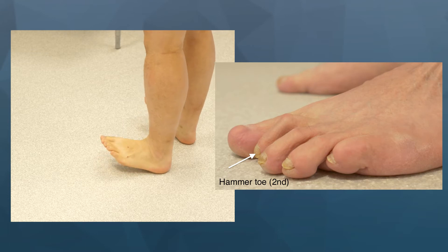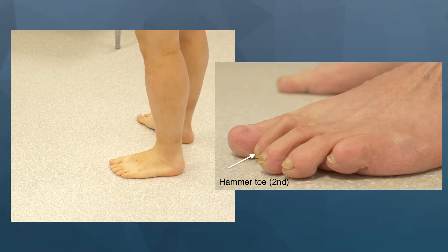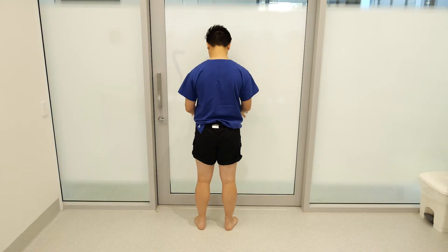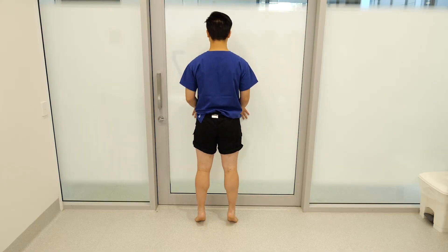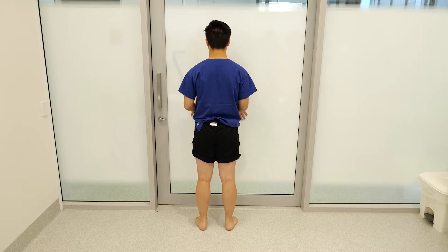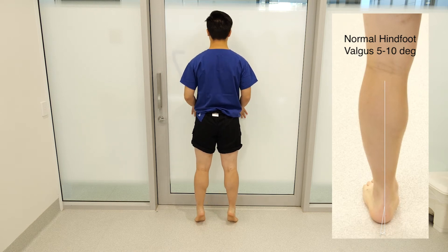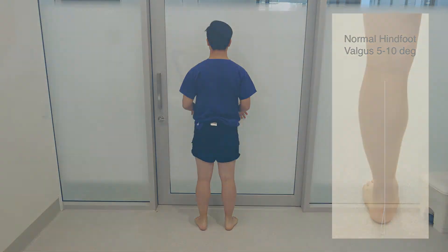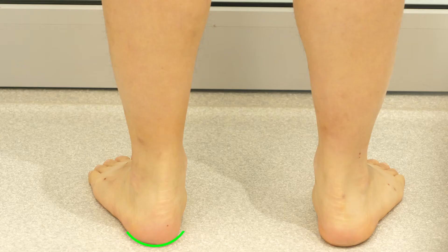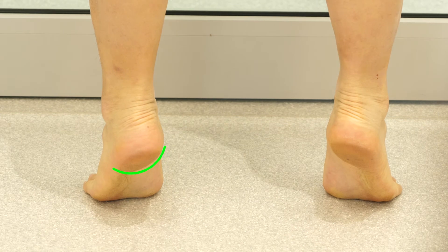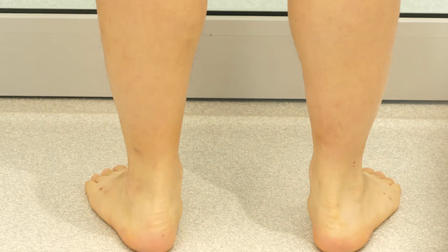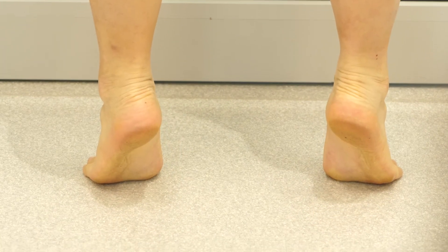Assess function by asking the patient to raise onto tiptoes and then heels. Assess posteriorly including the gastrocnemius muscle bulk, skin changes over the Achilles tendon, and overall alignment. Notice the normal hindfoot valgus alignment as depicted on the right-hand side of the screen — this is usually 5 to 10 degrees. When the patient goes onto tiptoes, this hindfoot valgus turns into a hindfoot varus in a patient with a flexible hindfoot.